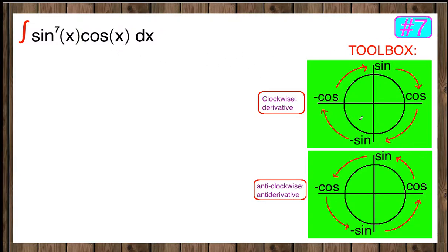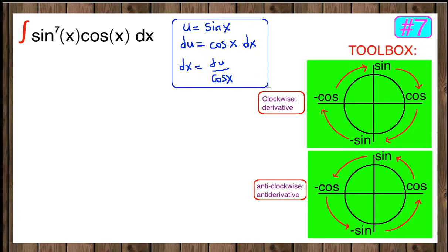This time we're going to pick u as sin x. So if u is sin x, what is du? du is the derivative of sine which is cos x dx. And if you solve for dx, dx will be equal to du over cos x. You divide both sides by cos x. So this is going to be our useful chart for this question.